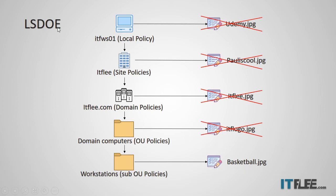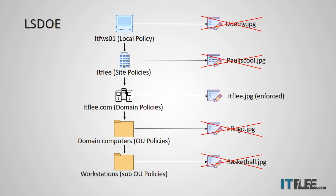We still haven't covered enforced. So if we wanted to enforce one of these policies — say we take ITFly.jpg and enforce this policy — what is going to win? Well, we know from our acronym that enforced is the last item in the order of precedence. So ITFly.jpg, the domain policy that is enforced, will take precedence over all the other GPOs because it is enforced.